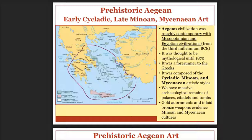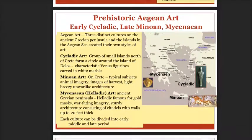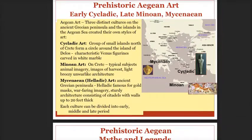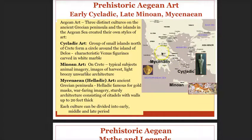We're going to look at the Cycladic islands — the Cyclades and Cycladic art — Minoan art on Crete, and the Mycenaean artistic styles. You can see the Cyclades in this area, the Minoan art is on the island of Crete, and the Mycenaean is on the Peloponnese Peninsula off of mainland Greece.